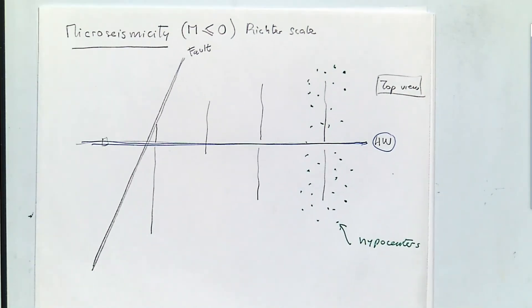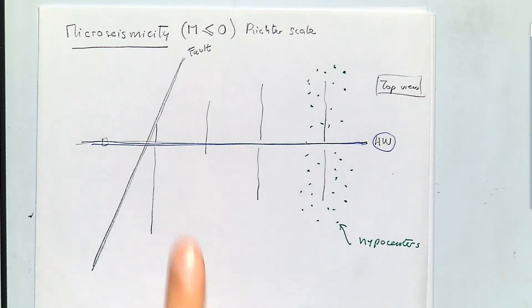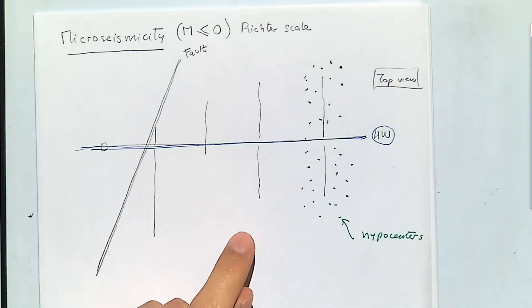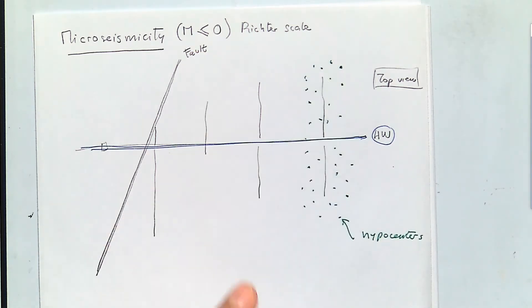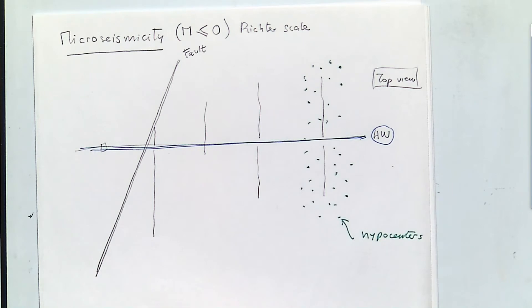A large earthquake on the Richter scale is around magnitude seven or eight — remember it's a logarithmic scale, so magnitude eight is ten times larger than magnitude seven. Micro seismicity is in the order of negative three, negative two, or negative one — which is a million times smaller than what you'd expect for a medium earthquake.